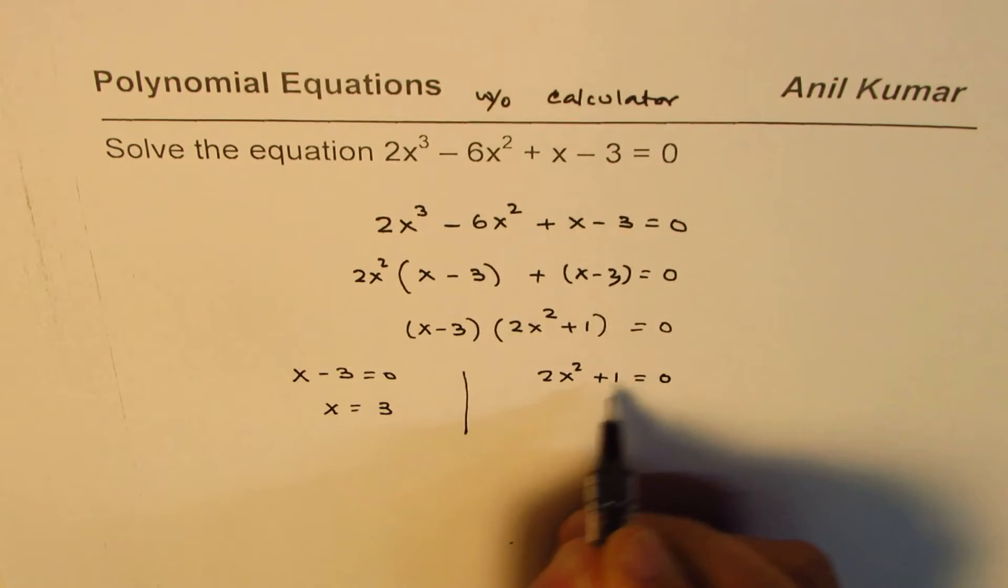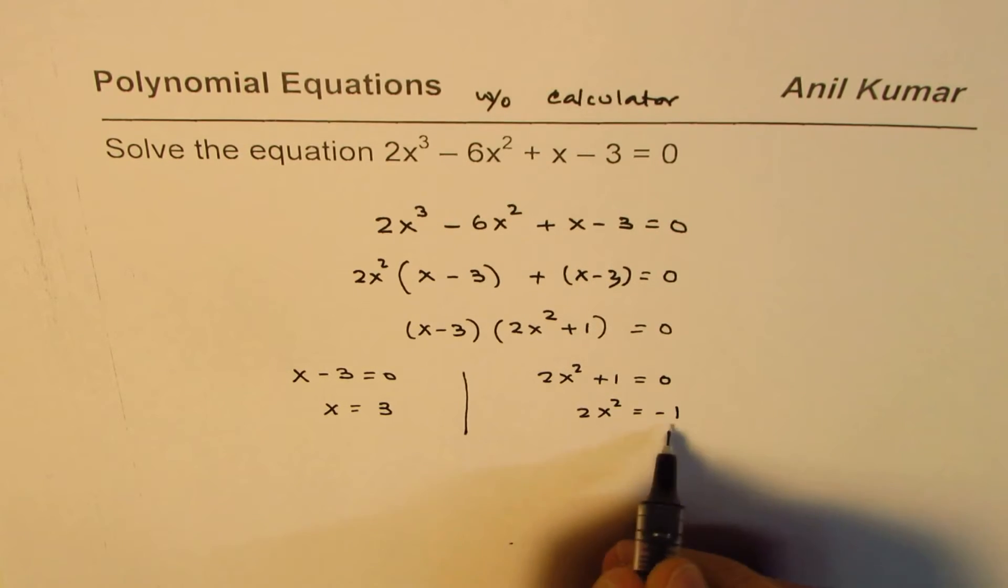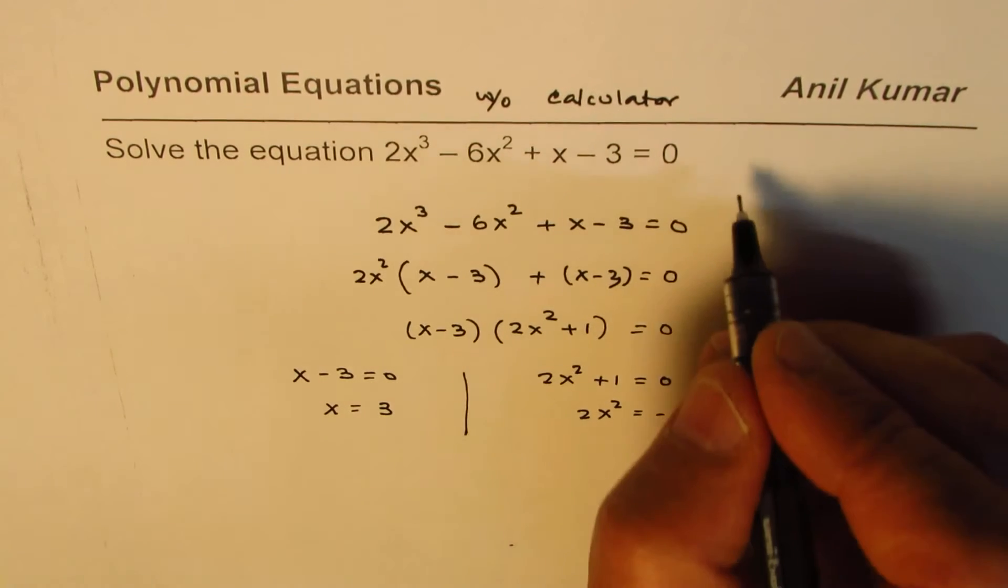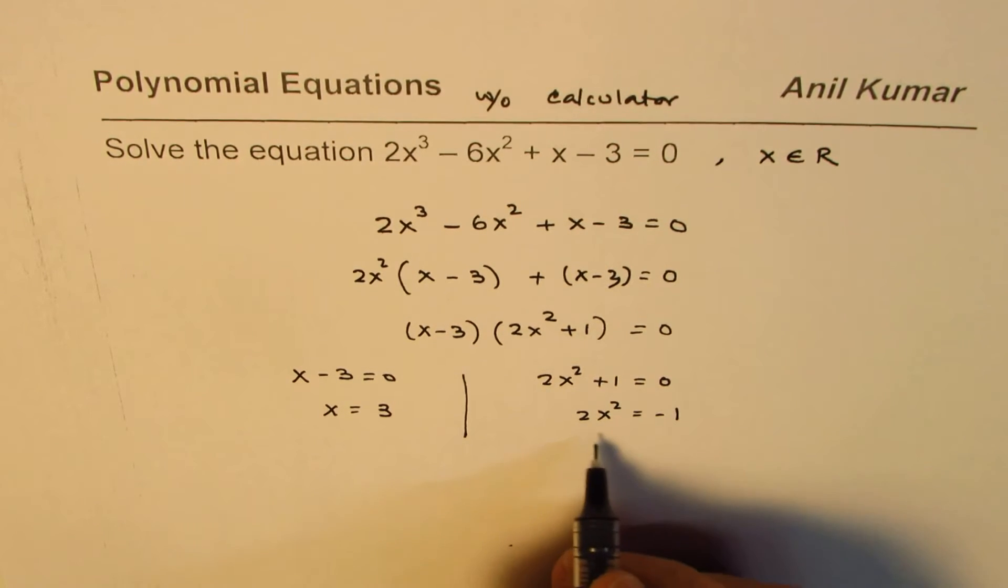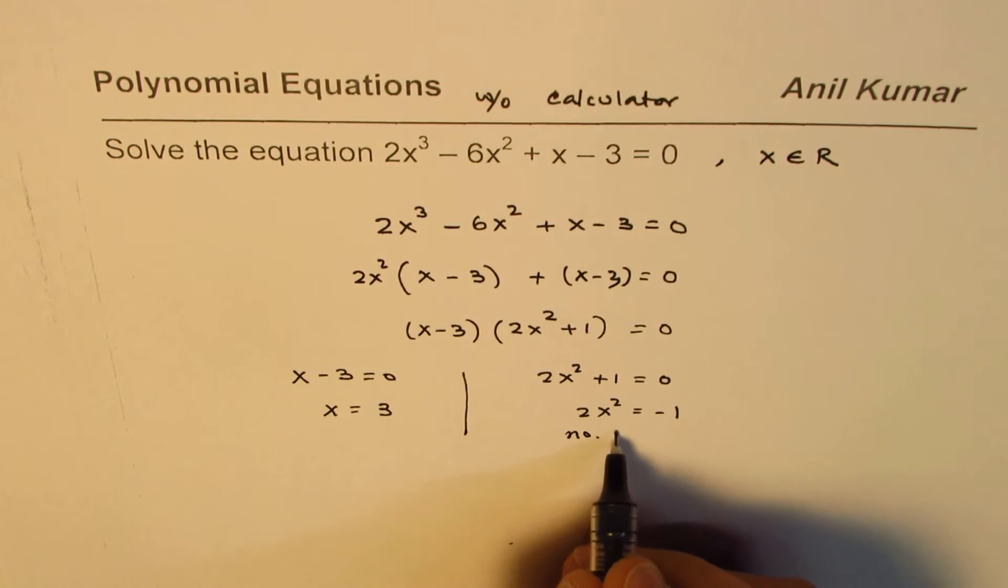That gives you 2x² = -1, that's a negative value. Now if the set is when you say x belongs to real numbers, then there is no solution in this case. No solution.